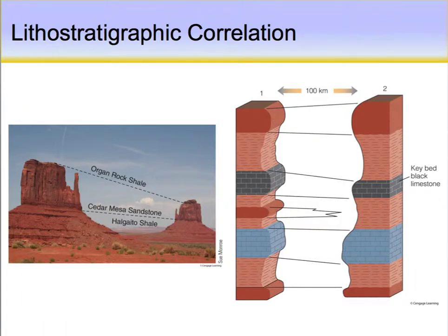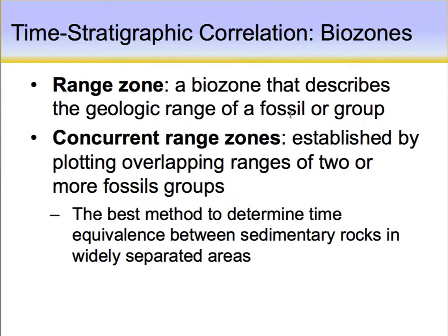Here's a good example of lithostratigraphic correlation: we can match the Cedar Mesa Sandstone straight across, the Organ Rock Shale at the top, and the Halgaito Shale at the bottom — just matching rock units straight across. A range zone describes a biozone in terms of a fossil or fossil group. We use concurrent range zones to establish overlapping ranges of two or more fossils to give us the age of a particular rock body.